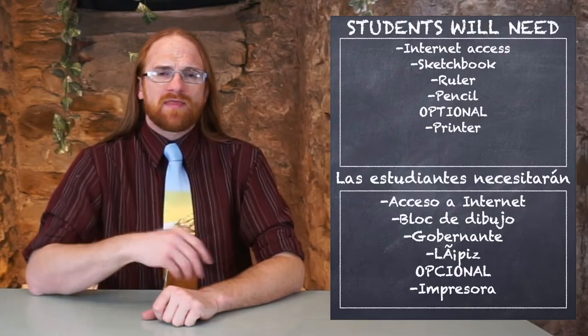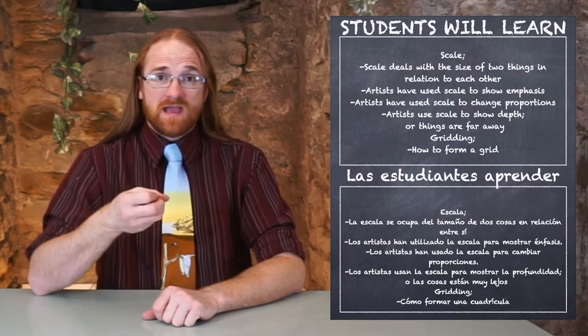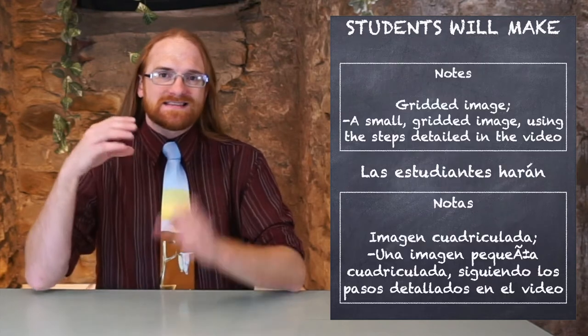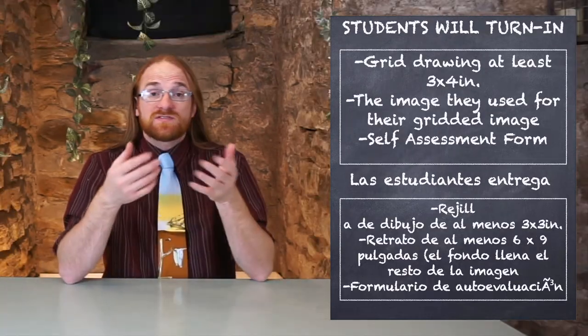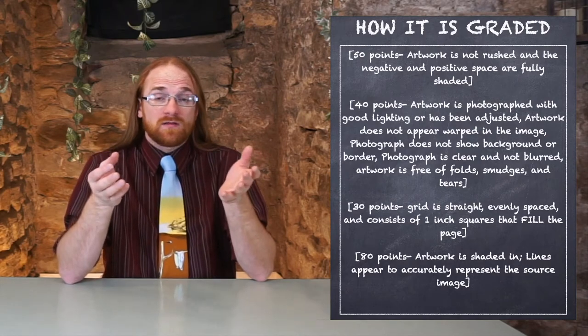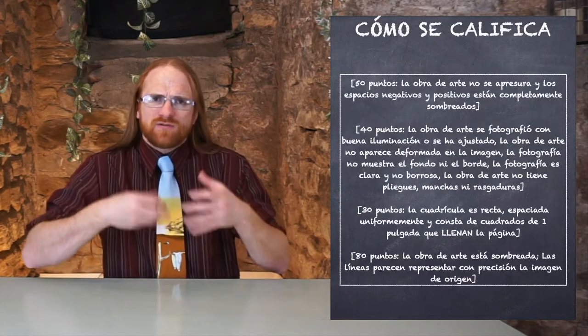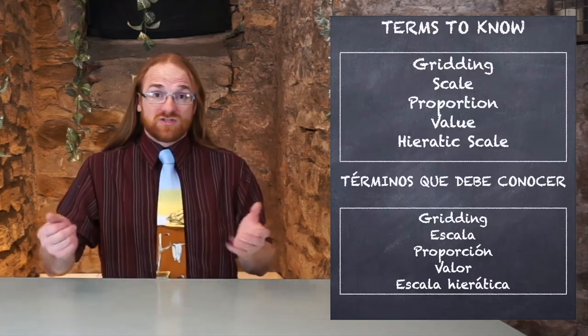When we talk about things being in scale or out of scale, what we're really talking about is the size of one thing in comparison with another. If you say that something looks out of scale, it means that it looks like it's out of size with the things that it's related to.